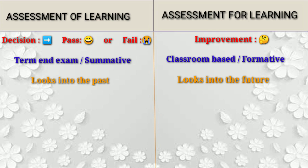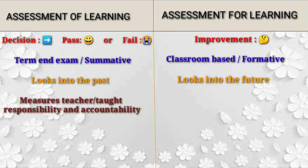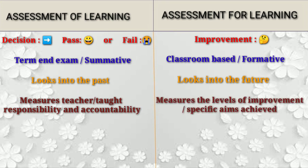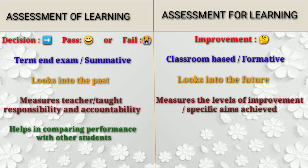Assessment of learning measures teacher's taught responsibility and accountability. While assessment for learning measures the levels of improvement, or in other words, the specific aims that are achieved during classroom teaching. Assessment of learning helps students, teachers and parents to compare the performance of an individual with other students — you can compare the percentage or grade of one student to another. While assessment for learning helps students and teachers to self-evaluate.